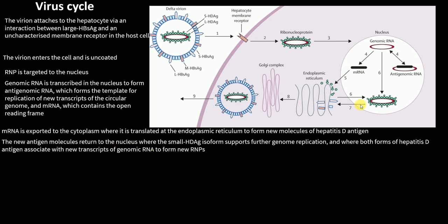These new antigen molecules return to the nucleus, where small HDAg supports further genome replication. Both isoforms of Hepatitis D antigen then associate with new transcripts of genomic RNA to form new ribonucleoprotein (RNP) complexes.